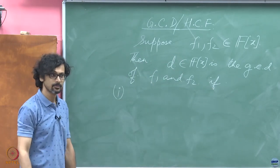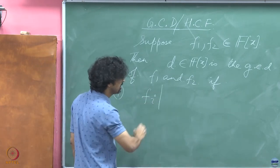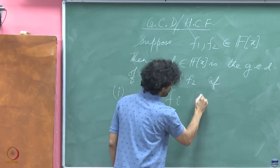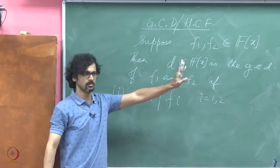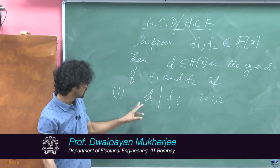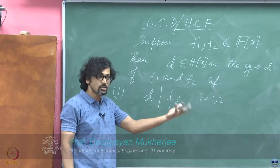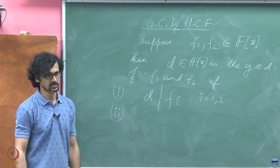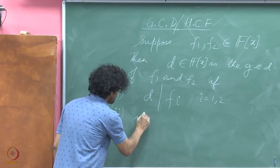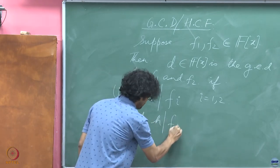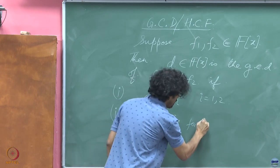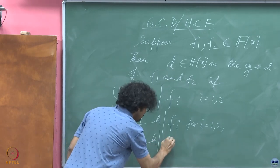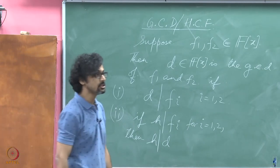D divides F_i for i equal to 1 to 2 — that is just a common divisor. But if it has to be a greatest common divisor, then it must additionally satisfy: if H divides F_i for i equal to 1 to 2, then H also divides D. So that is the definition of the GCD of polynomials.